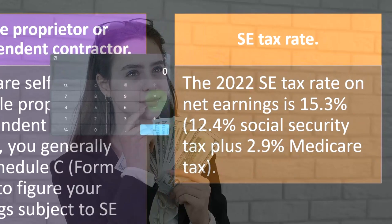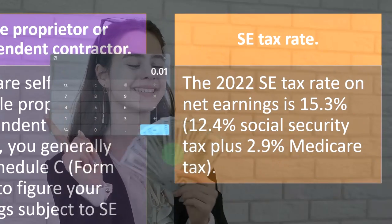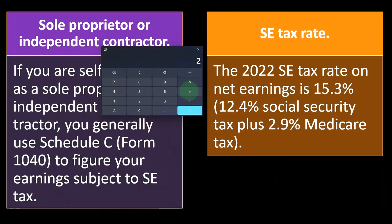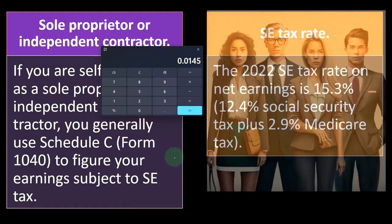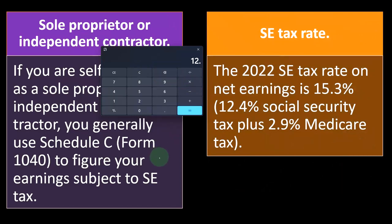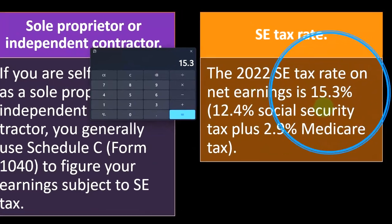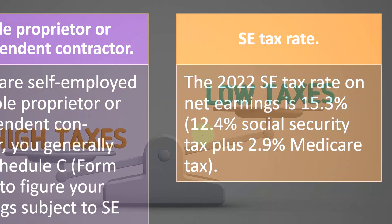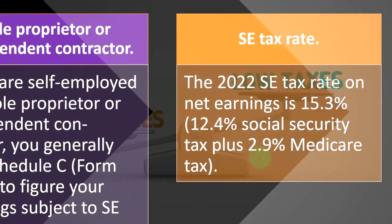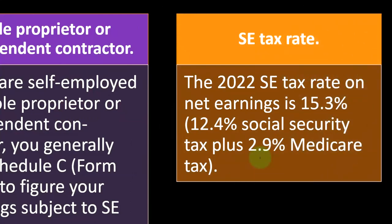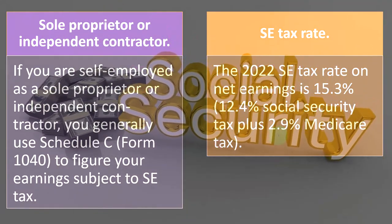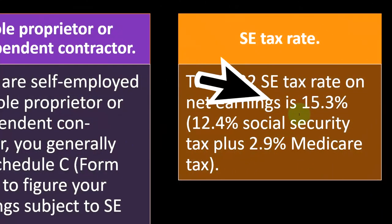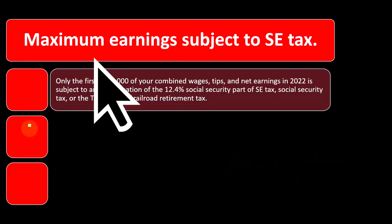Similarly for Medicare: the employee withholding rate on a W-2 is 1.45%, and doubling that for the employer portion gives 2.9%. Adding 12.4% and 2.9% totals 15.3%. It's important to keep the Social Security and Medicare rates separate, not just use 15.3% across the board, because there's a cap on Social Security — once you exceed the threshold you stop paying Social Security tax — and there may be an additional Medicare tax above a certain income level.